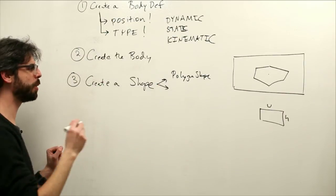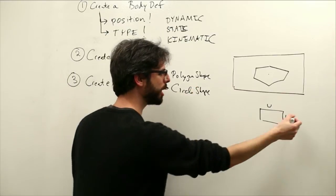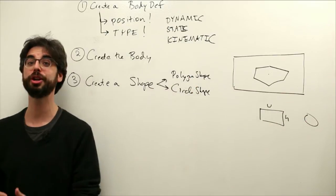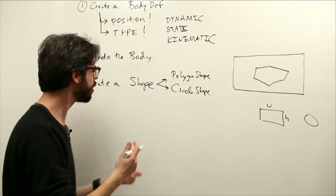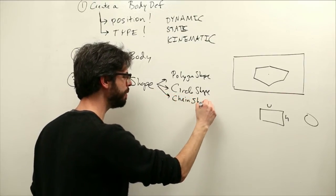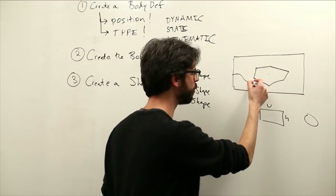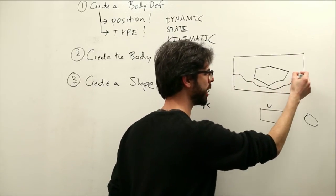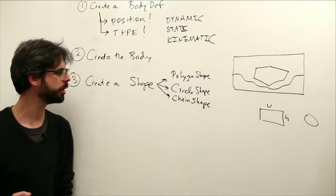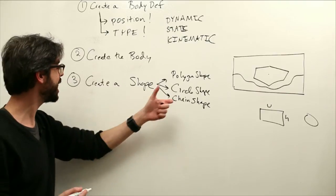Another kind of shape that we can create is a circle shape. So if we have circular objects, you can imagine what that is. We're going to create a circle shape. There are other things too. One that just jumps to my mind right now is chain shape. And we'll look at some examples of a chain shape. A chain shape is something you might use for a surface, like a terrain in a two dimensional world. So there are different kinds of shapes.